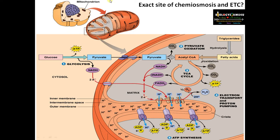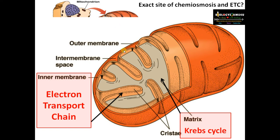First, we need to know the exact site of chemiosmosis and the electron transport chain. The organelle involved in the electron transport chain is mitochondria. Mitochondria has an outer membrane and an inner membrane with infoldings into the matrix called cristae. The site of the electron transport chain is the mitochondrial inner membrane.